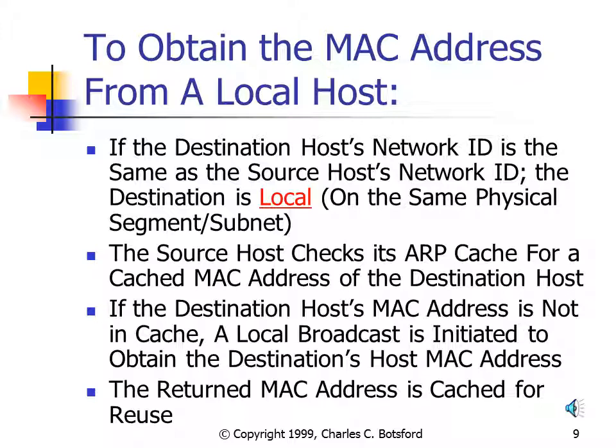When the destination is local — on the same physical segment or subnet — the source host checks its ARP cache for the cached MAC address of the destination host, since if it communicated with the destination recently it will have that entry. If the destination host's MAC address is not in cache, the source host initiates a local broadcast sent to all computers on the physical segment. Only the destination computer returns its MAC address. The source host caches it for future use and places the MAC address in the destination address field of the Ethernet or token ring frame to set up a TCP connection.